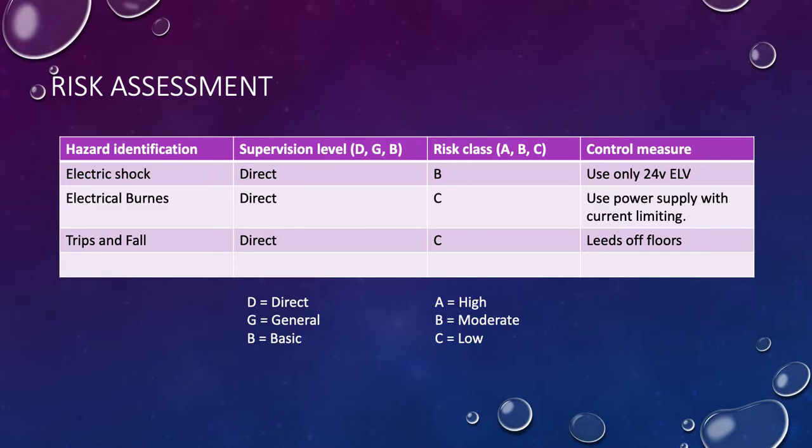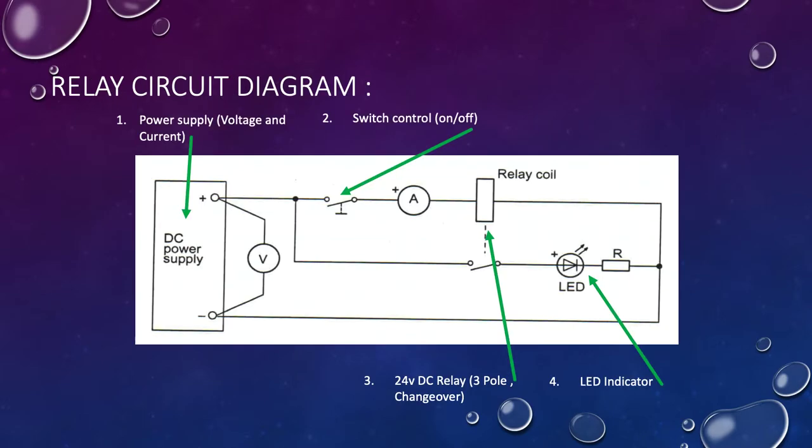Electrical burns are possible, again a direct risk, only category C. The power supply has a current limiting feature, so I'm going to limit the current to a point where it would not cause any problems. Finally, there might be trips and falls around the benches, so keep the leads off the floors.